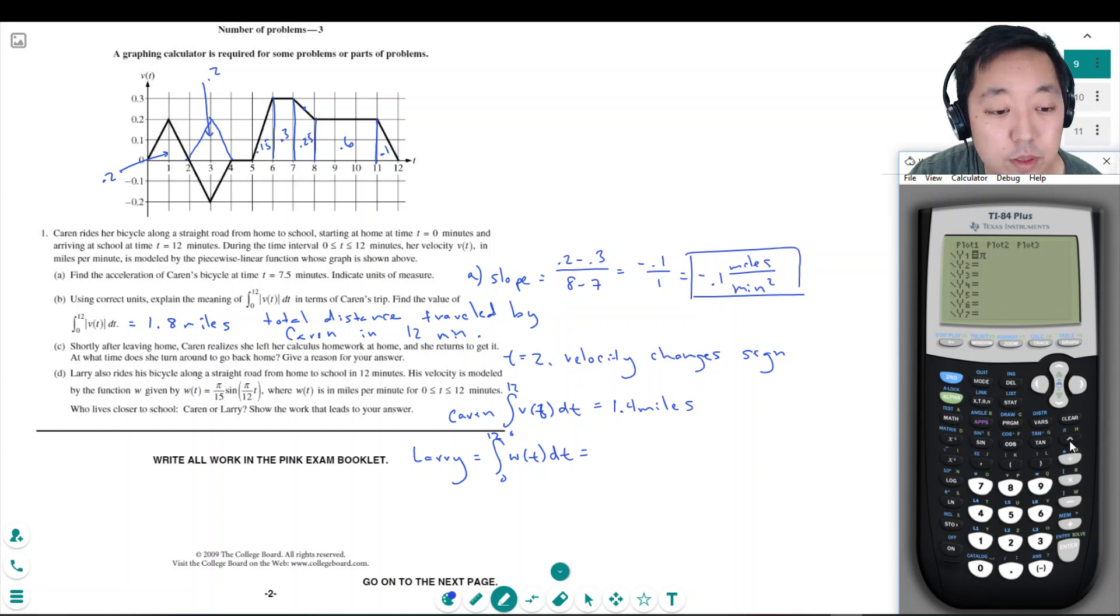So we're going to plot this function and we're going to get the integral. So let's find pi. Pi is here. So it's pi divided by 15 times the sine of pi over 12 times x. It's going to plot it, but it's going to be super narrow.